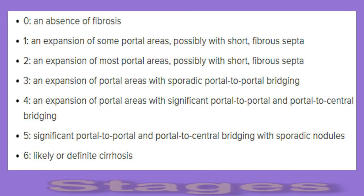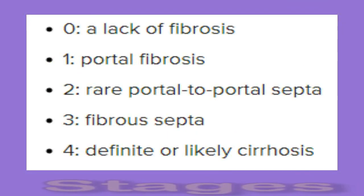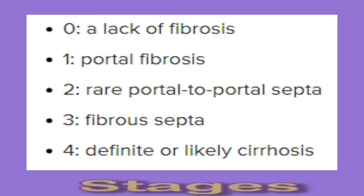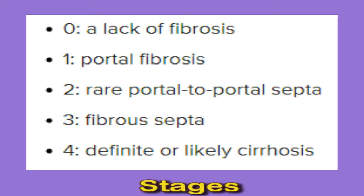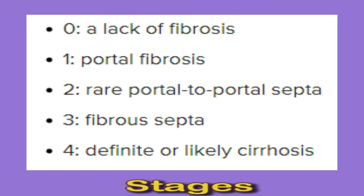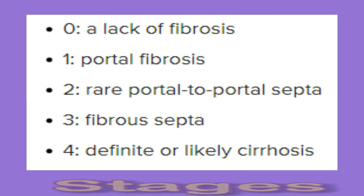The Birds Ludwig scale, common in the United States, is slightly simpler. This scale runs from 0 to 4: 0 is a lack of fibrosis, 1 is portal fibrosis, 2 is rare portal-to-portal septa, 3 is fibrous septa, 4 is definite or likely cirrhosis. Using the Birds Ludwig scale, the most advanced stage of fibrosis a person can have before developing cirrhosis is stage 3.